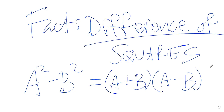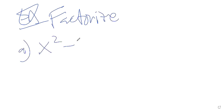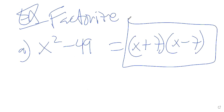Difference of squares, example: factorize X squared minus 49. This is called a difference of squares because difference means subtraction. I know the square root of both terms. So the factorization would be: put a plus and put a minus. The square root of X squared is X — it goes in the front. The square root of 49 is 7. That would be the factorization: (X + 7)(X − 7).